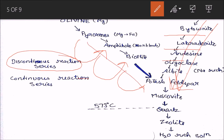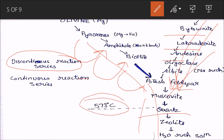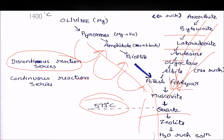These two series — the discontinuous and the continuous — merge at a point and then continue as a discontinuous series down to H₂O dissolution. This last stage is around 573°C for quartz. That is what the Bowen Reaction Series is all about — the sequence in which magma crystallizes.